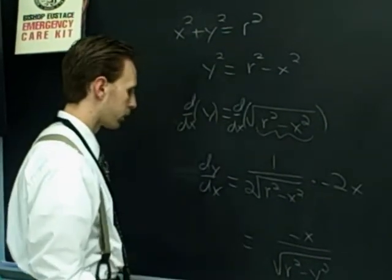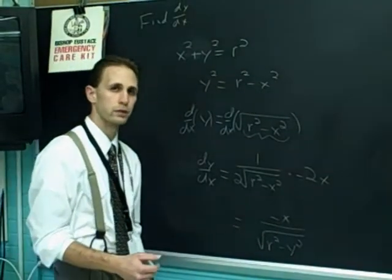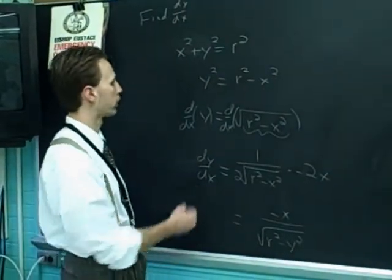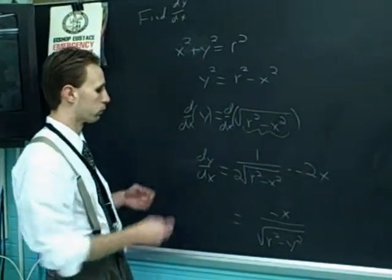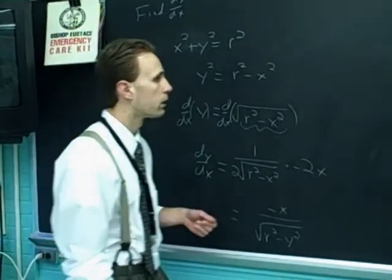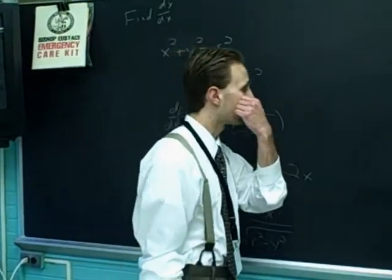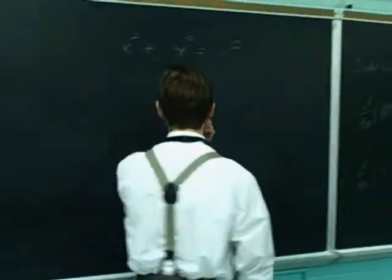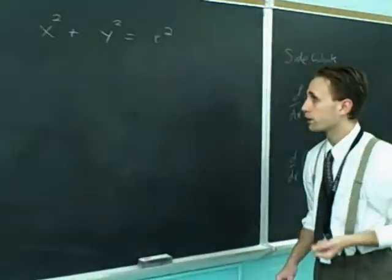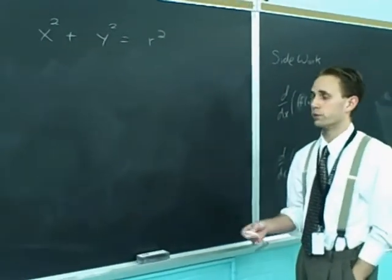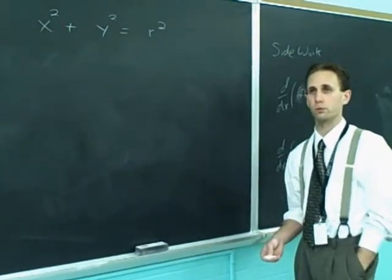And that's all fine and good. This is called explicit differentiation because we had y isolated before we tried to differentiate. I'm going to do it a different way called implicitly. That's where you do not have y solved for first.